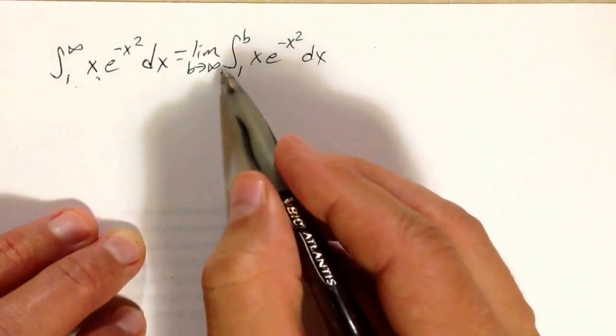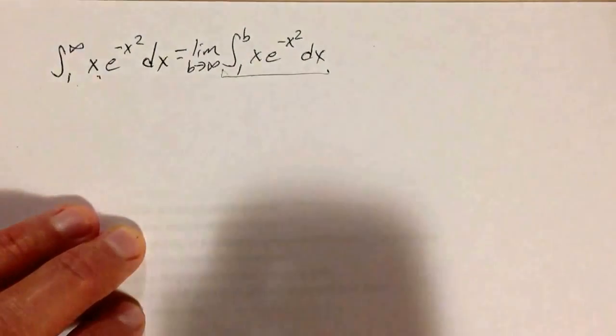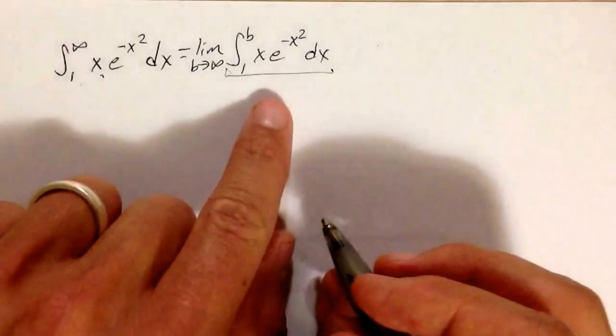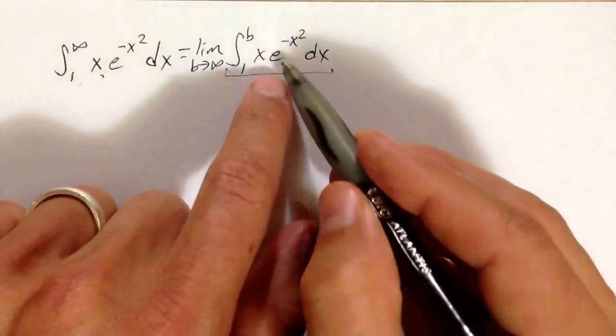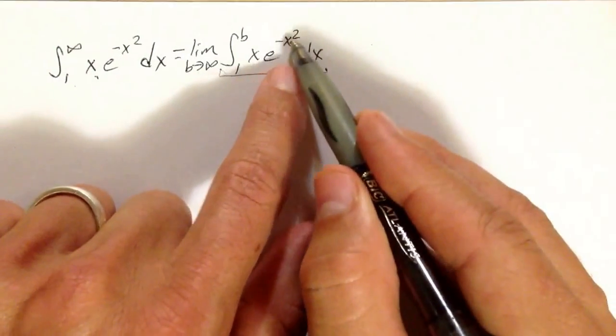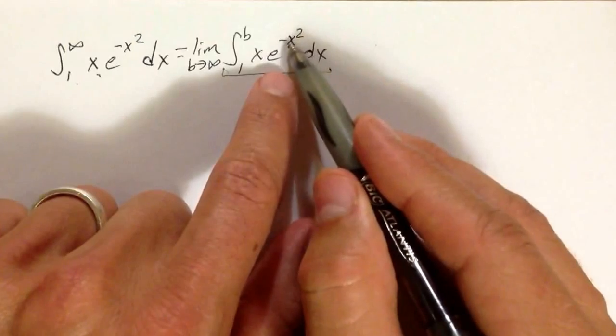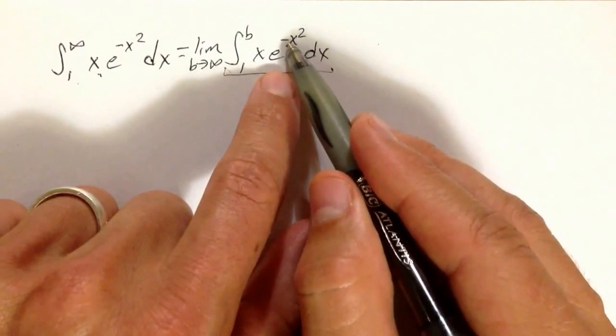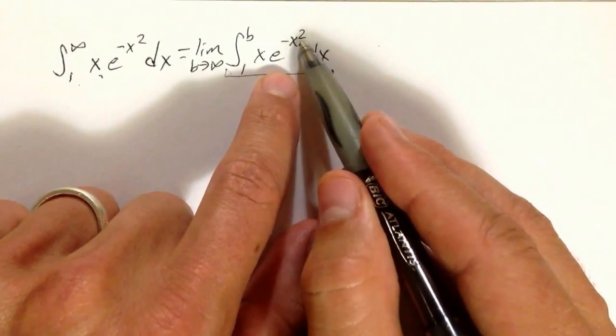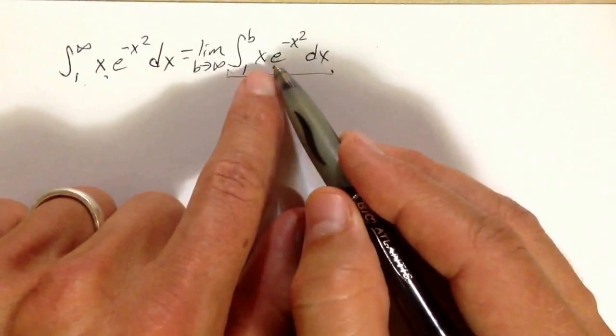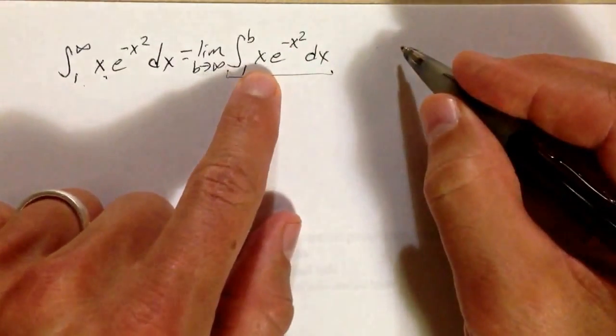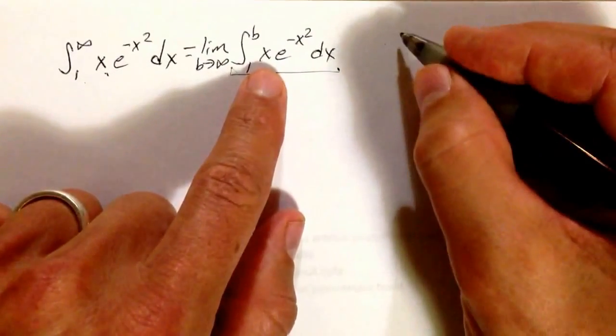Now, of course, this has some sort of finite answer. I notice that I have e to some other function, and the derivative of this function is negative 2x dx. I've got an x down here, so this is a good hint that I'm going to use a u-substitution.